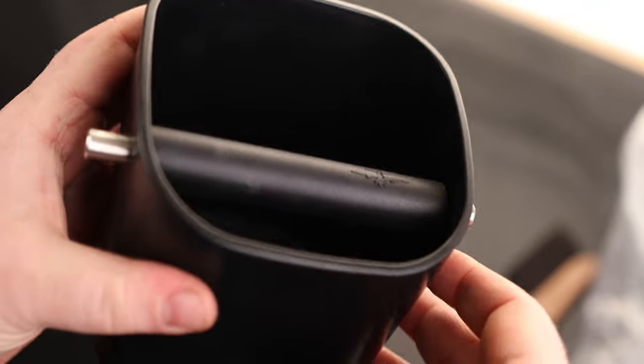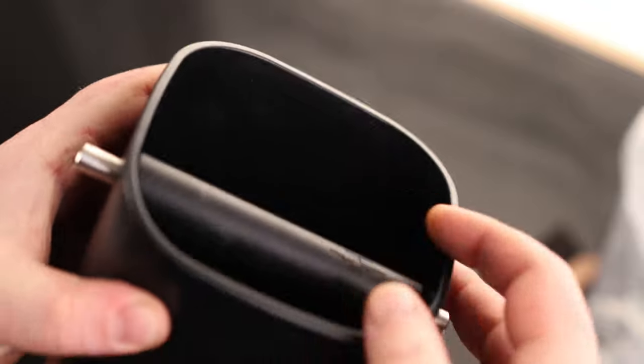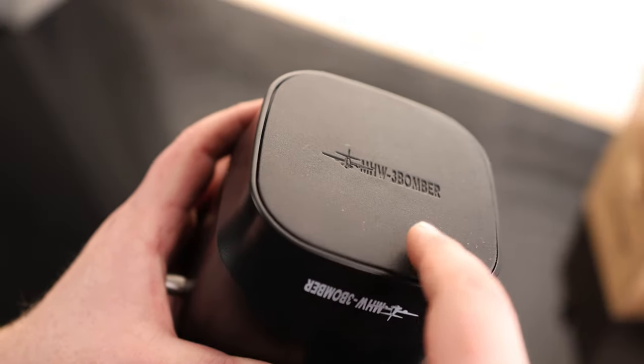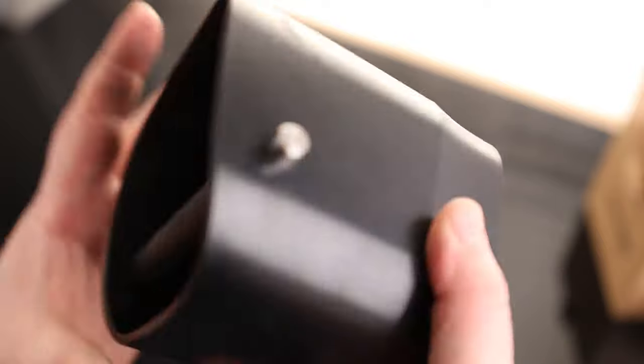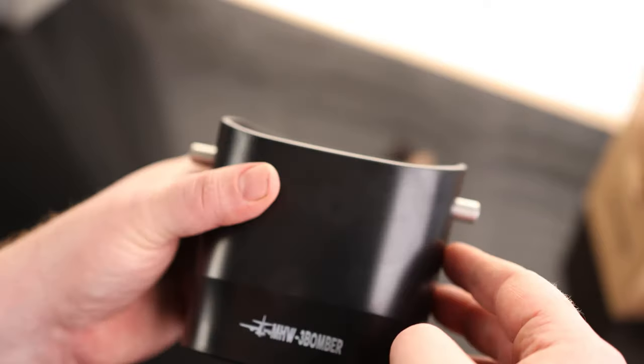Cool. Nice tight tolerances on there, which is going to be very good, so you don't have to worry about this thing wobbling around. And one thing I really like to see also is that the entire bottom is rubber-coated. So you don't have to worry about that damaging the surface of the table, but you also don't have to worry about that thing moving around. So very cool.